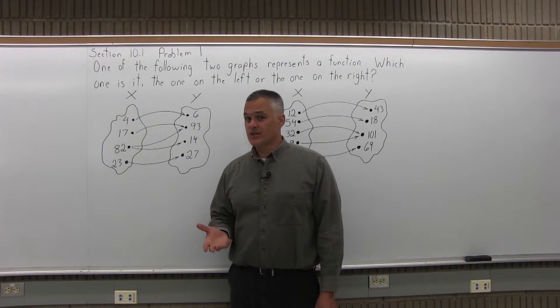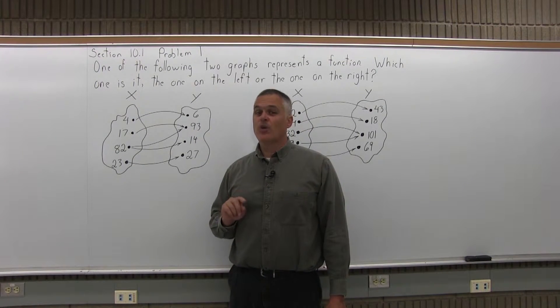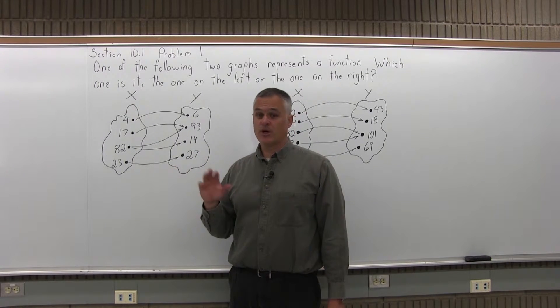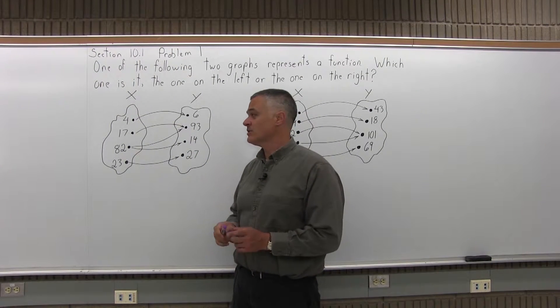Now remember, there's only one rule for a function. Any input can have only one output. You can't give it an input that goes to two different outputs like the mother and the daughter example in class that we talk about.